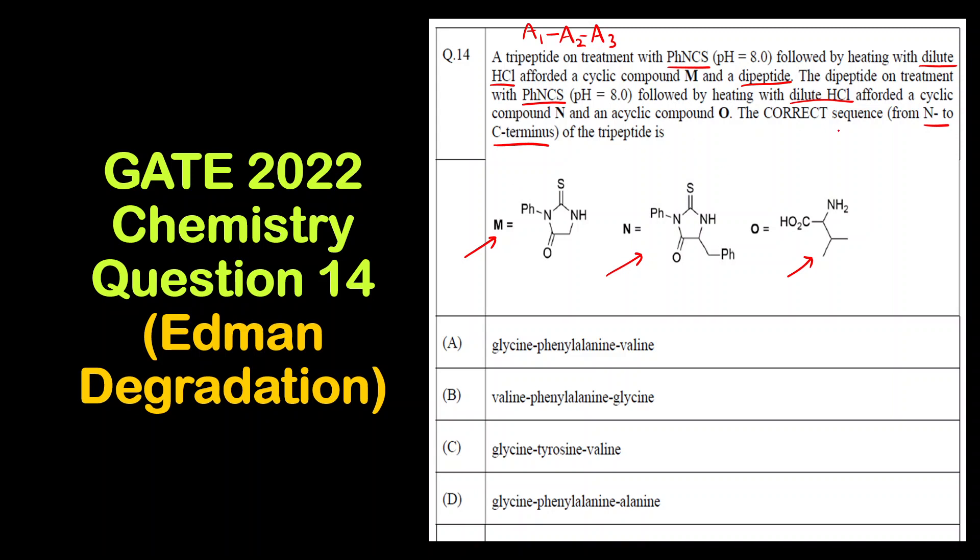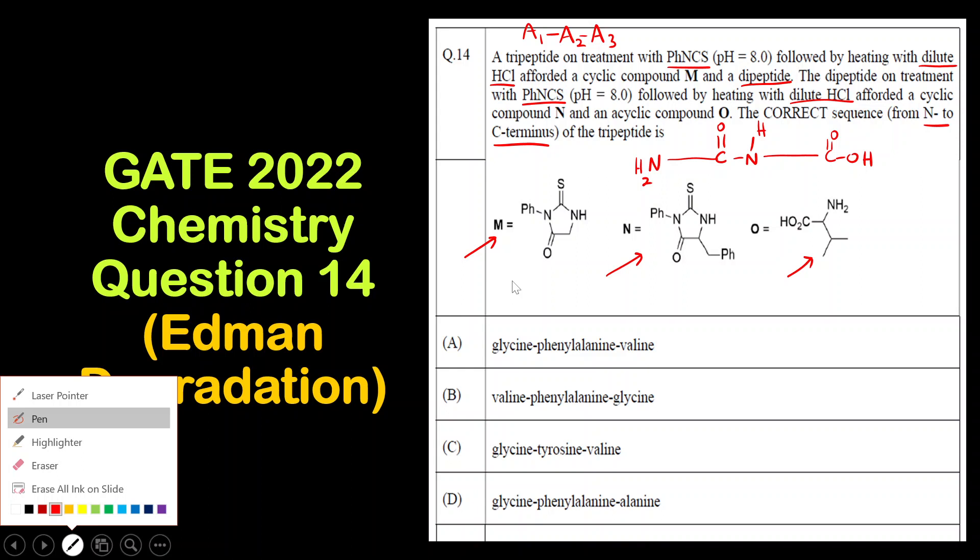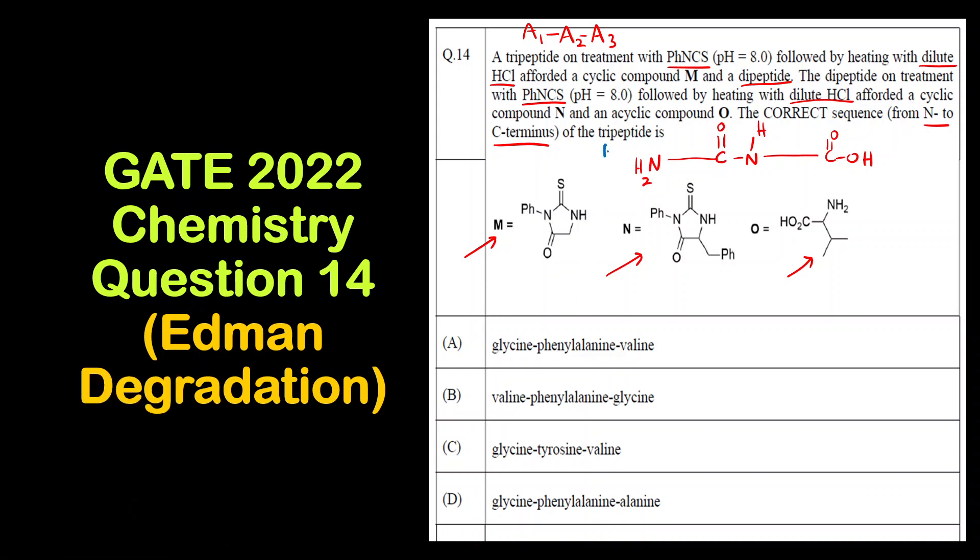So now let us first understand what is N terminal and what is C terminal. The peptide bond is always CONH, that is the amide linkage. This first carbonyl group is of the first amino acid. So here there will be an amine group, and on the extreme right you will find carboxylic acid because this NH is the amine group of the second amino acid. Here you can see it is a nitrogen atom. So that is why this is called N terminus. The extreme right is called C terminus. This is a basic structure of any peptide structure.